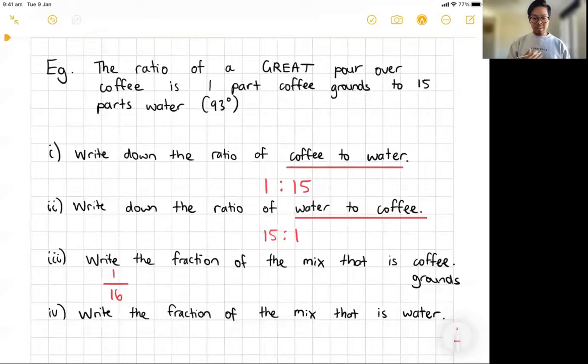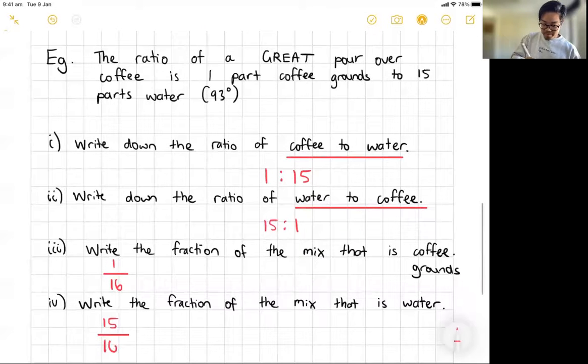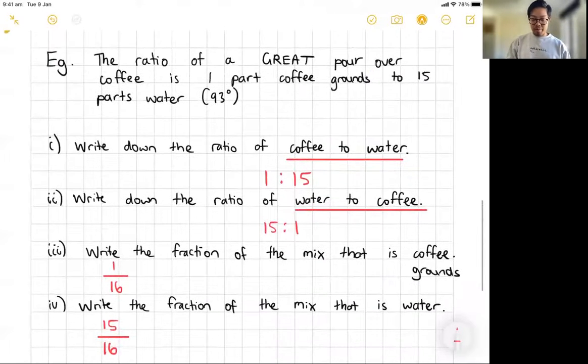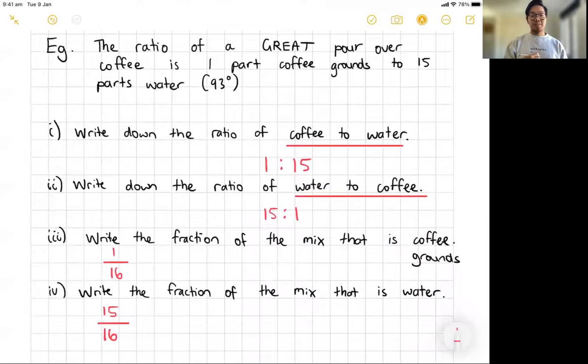Now, if I was to do something similar, but this time, I want to write the fraction of the mix that is water. Right. So again, I'm going to write a little bit of a fraction. And how many parts of this was water? Well, we can see here those 15 parts here that was water. And we figured out from the last question that how many parts are there altogether? If there's 15 parts water, one part coffee is going to be 16 parts altogether. Right. Now, maybe that might be worth going over again and looking over. But a lot of the questions that we'll start to look at for today will be kind of along these lines of writing down the ratios and finding the fraction, writing down your ratio as a fraction.